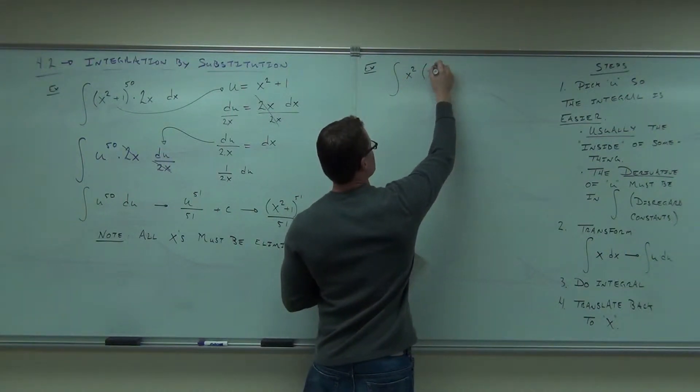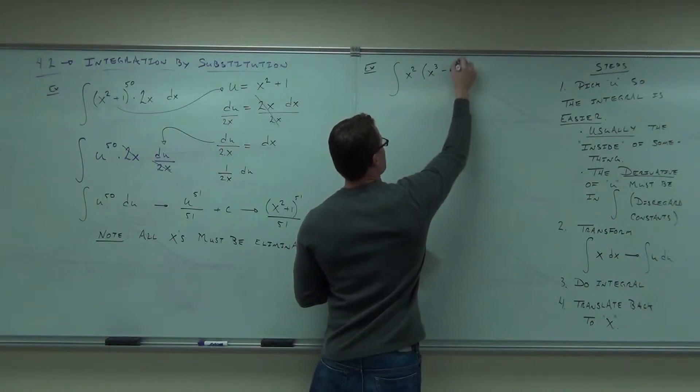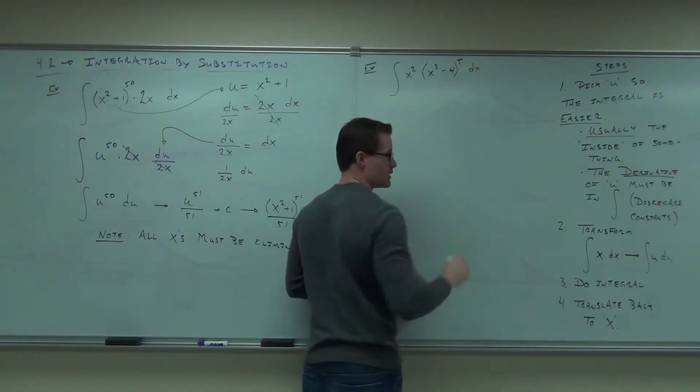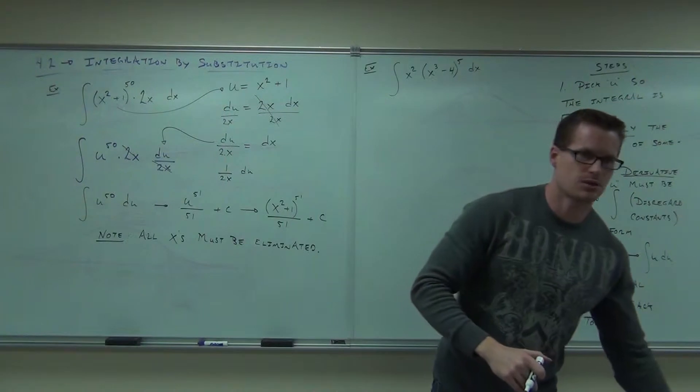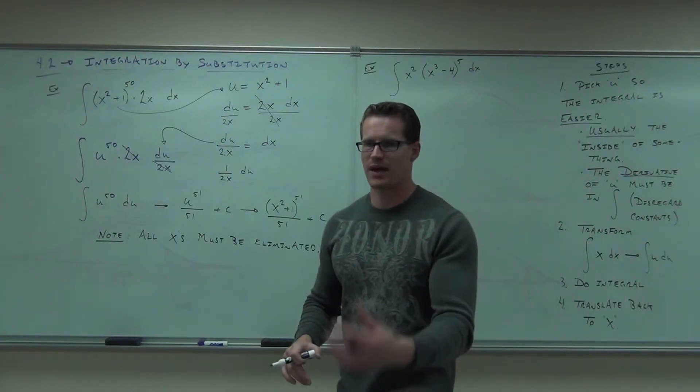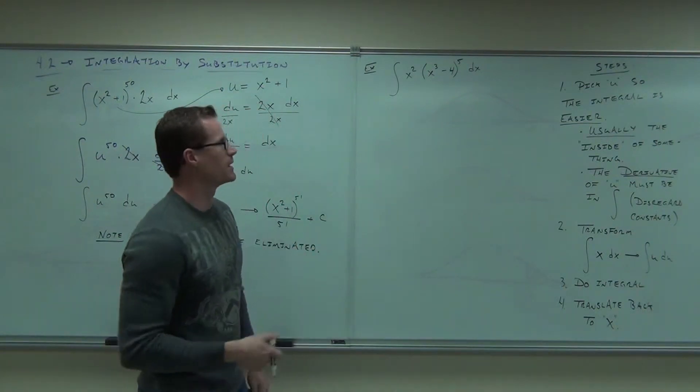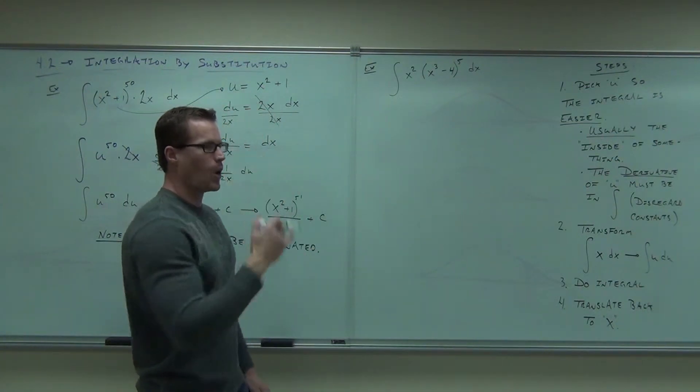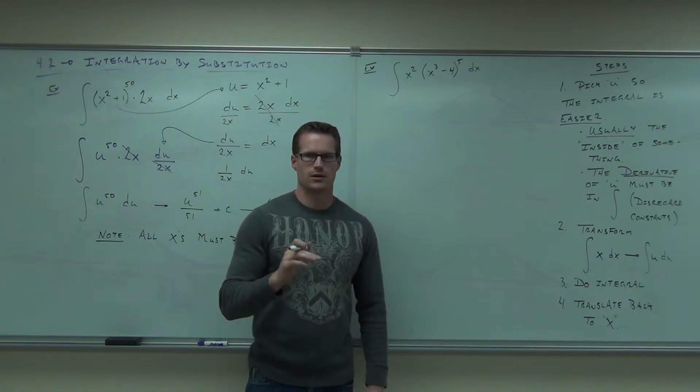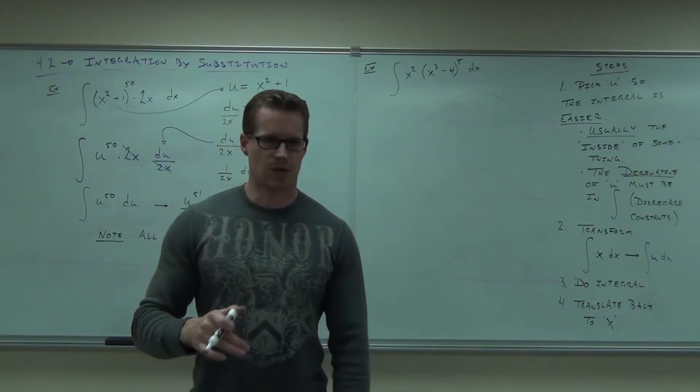You know, sometimes this u substitution stuff is pretty obvious. Until you get to trig and then it becomes a little bit more cumbersome. But stick with the idea that your derivative has to appear somewhere. That you have to cross stuff out. You have to get rid of things and then it helps you a lot. So in this one, hopefully we can kind of pick out the u already. Can you pick out the u already?